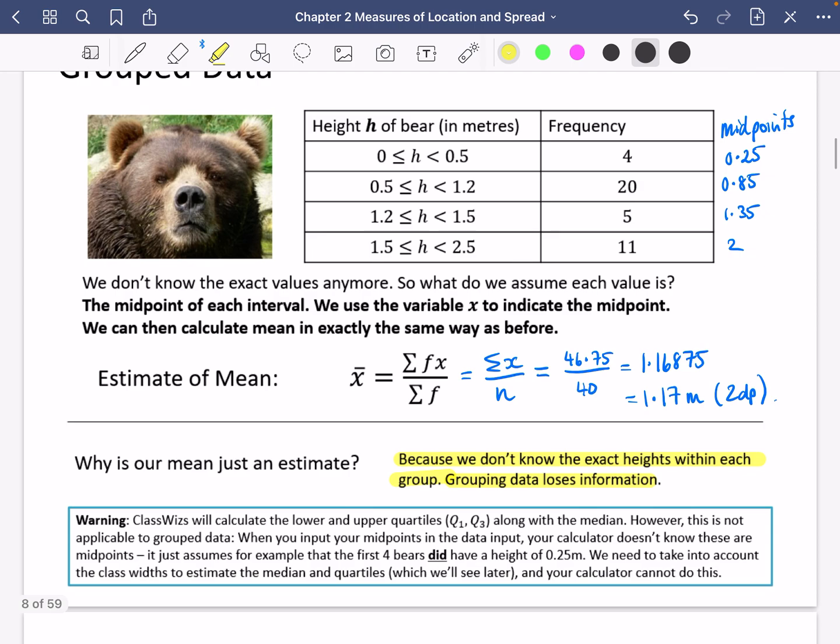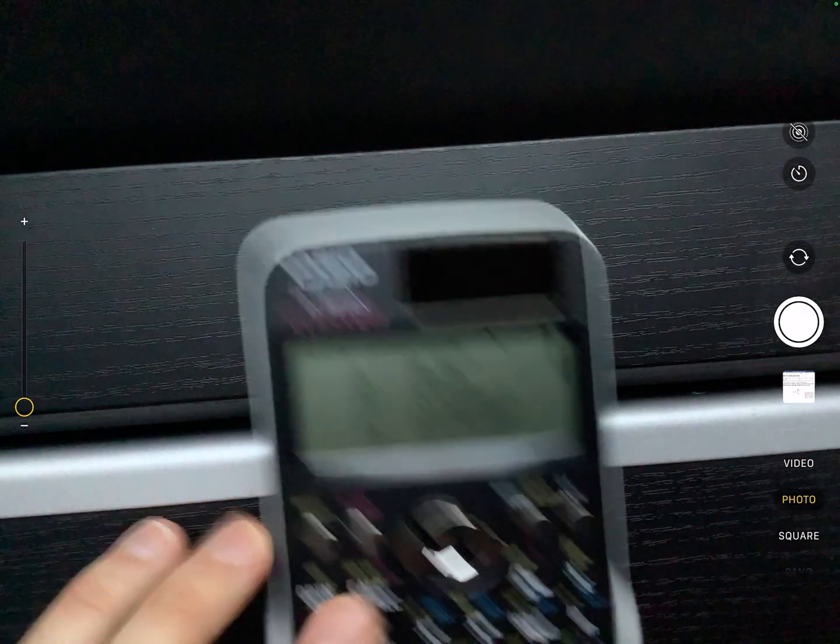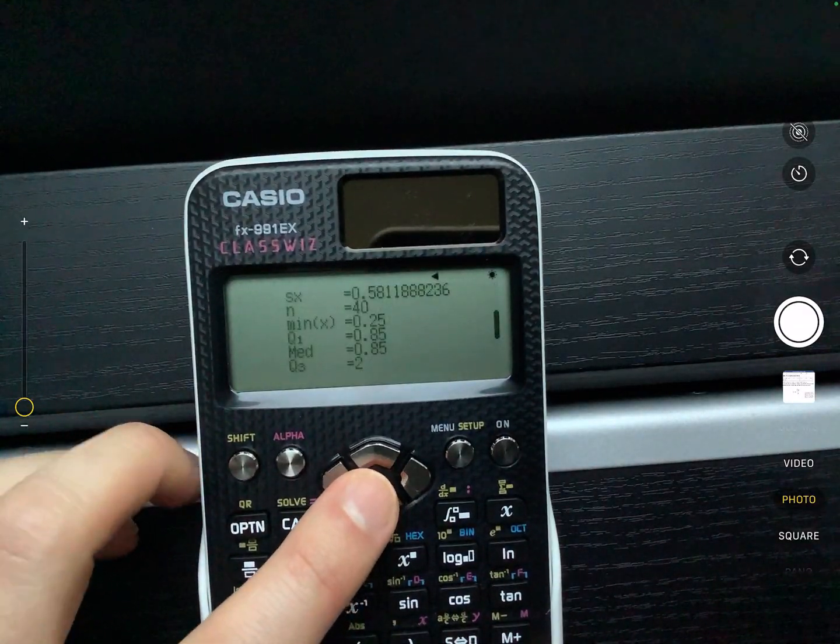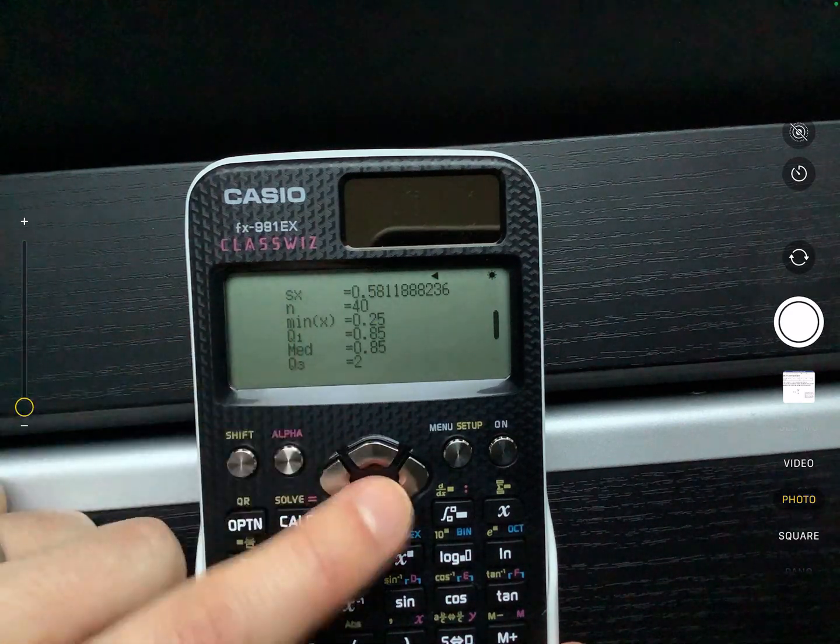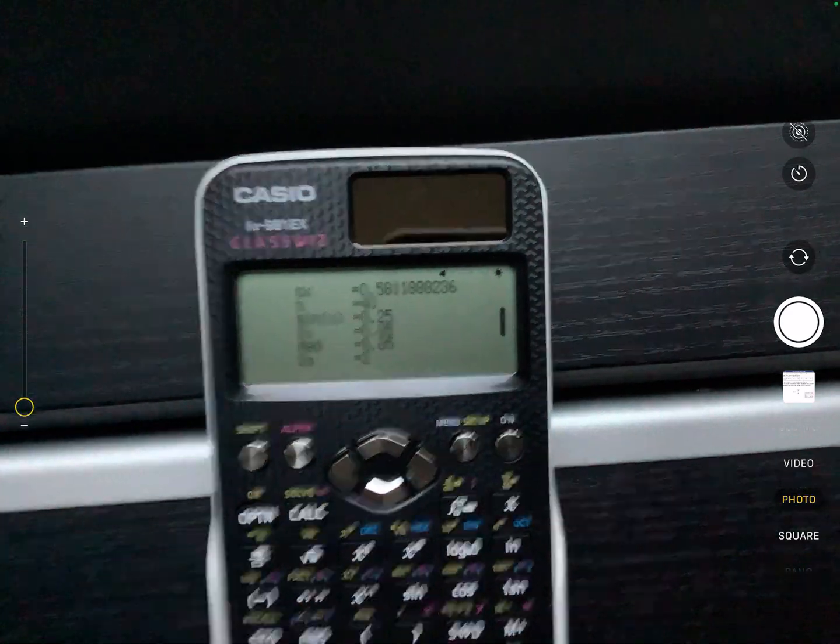One last thing before you do some practice for me is I've said that the Class Wizzes will calculate the lower and upper quartiles along with the median. I'm just going to quickly show you what I mean when we go to this bit here. So if I just quickly come back, you'll see that they've actually, if you scroll down, they calculate the Q1, which is a quartile, they calculate the median and things like that.